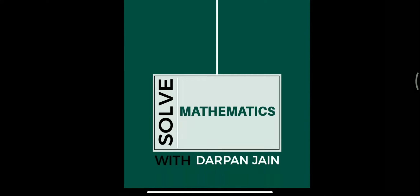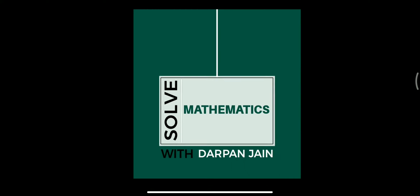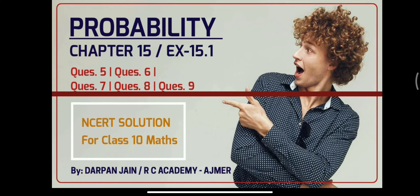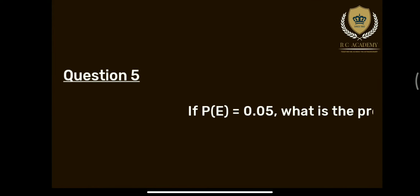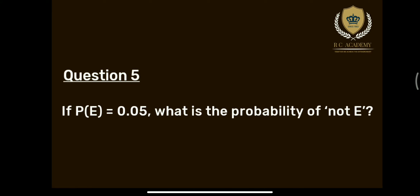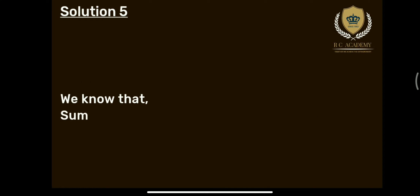Question 5: P(E) = 0.05 given है। What is the probability of not E? उनके अंदर क्या पूछ रहा है कि P(E) की probability 0.05 given है, हमको P(not E) की probability find out करनी है। तो हम इस question को कैसे करेंगे? आइए देखते हैं solution पर। We know that the sum of probability of both events is 1.